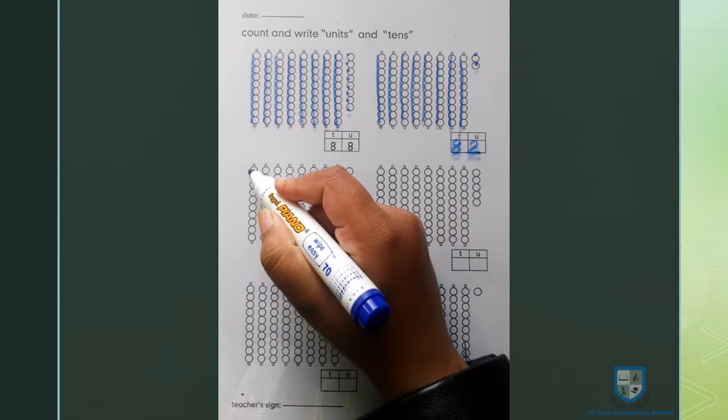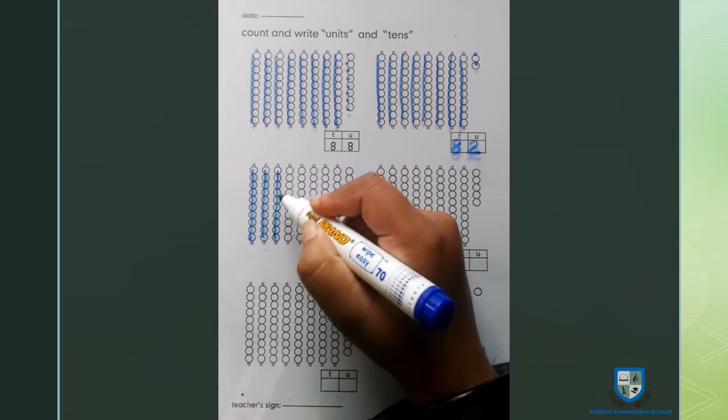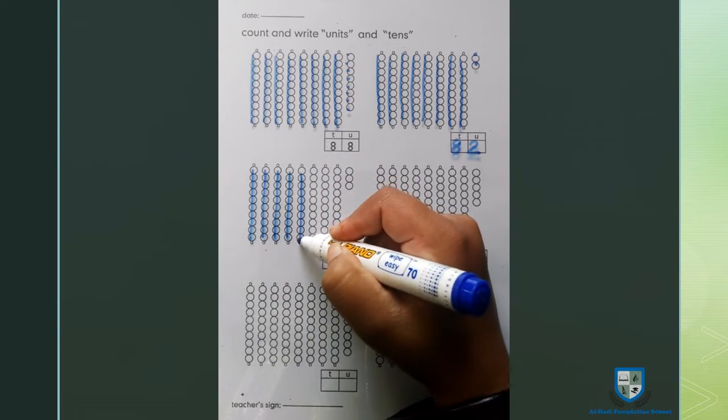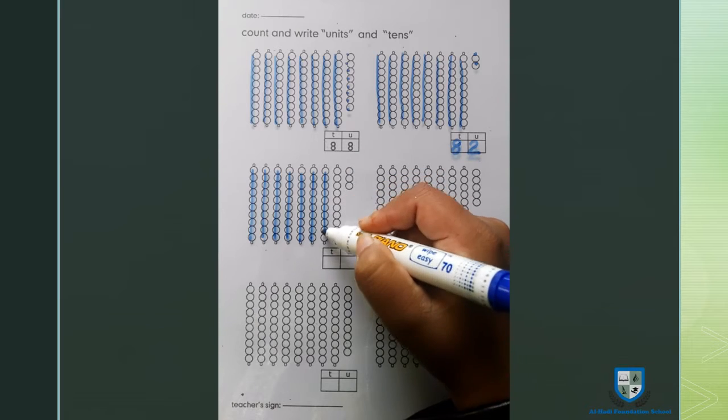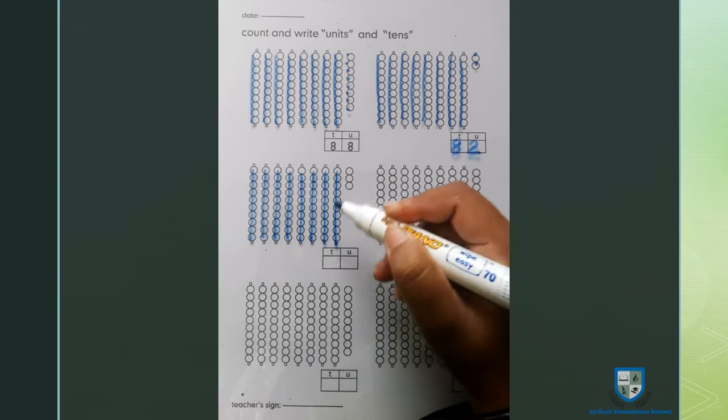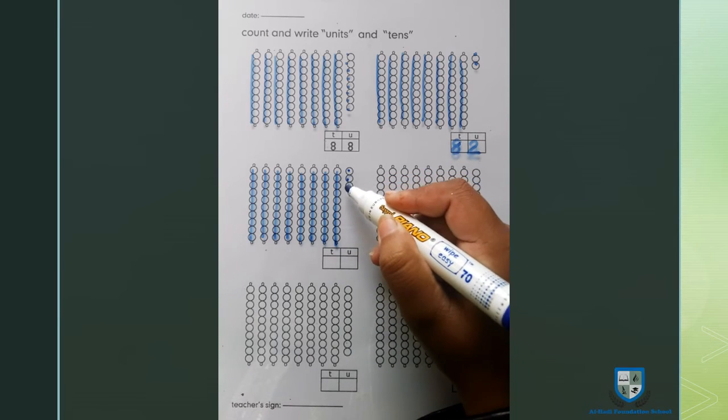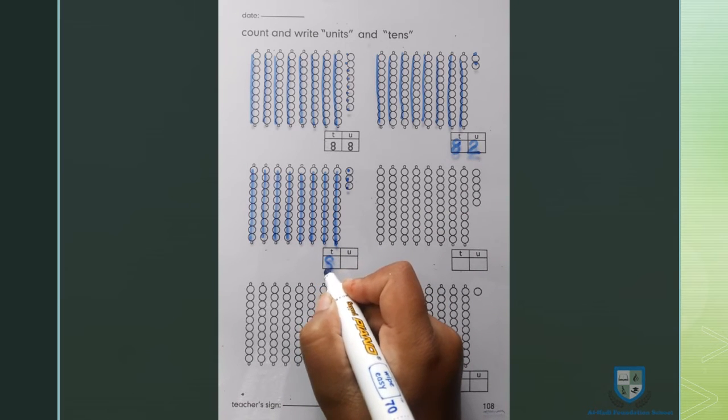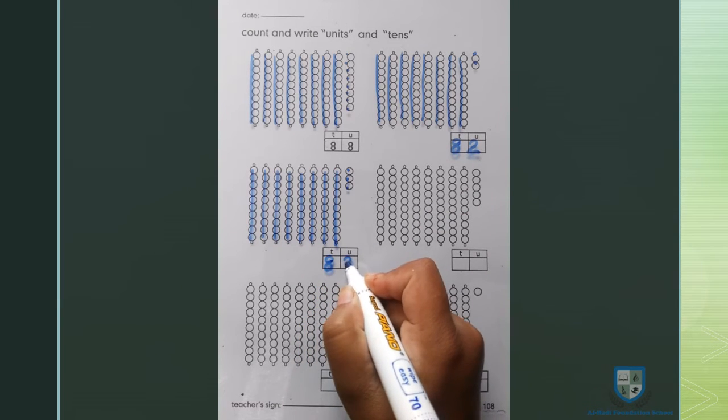Next. 10, 20, 30, 40, 50, 60, 70, 80, 81, 82, 83. 8 tens, 3 units. 83.